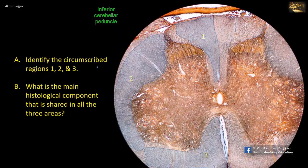Identify the circumscribed regions 1, 2, and 3. What is the main histological component that is shared in all three areas?